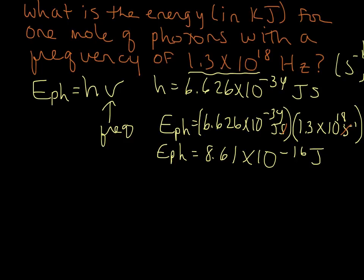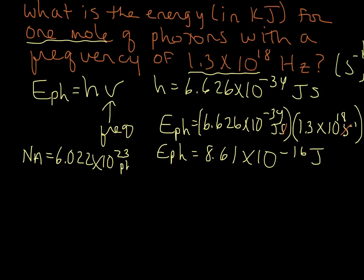So now how much energy would be in one mole of these photons? Let's remind ourselves of Avogadro's number — whenever we're thinking one mole of something, we're thinking 6.022 times 10 to the 23rd of them. Remember Avogadro's number: 6.022 times 10 to the 23rd — in this case it's going to be photons per mole.